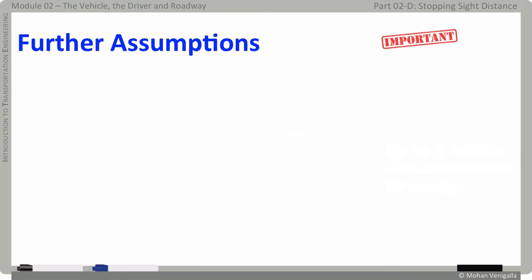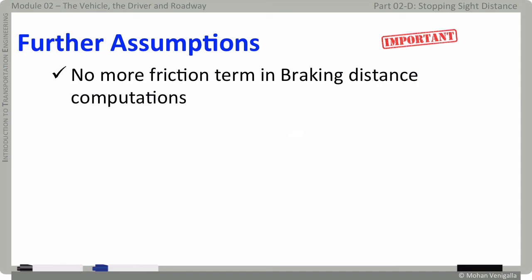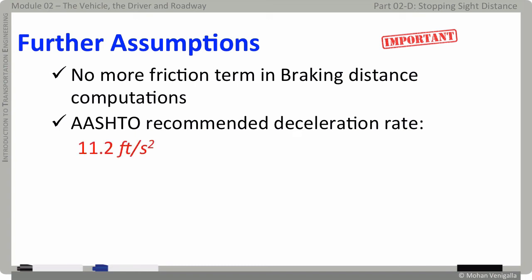For computing braking distance in prior versions of the Green Book, AASHTO recommended using a roadway friction term. Now it is much further simplified by capturing the effects of friction in a generous deceleration rate. AASHTO now recommends a deceleration rate of 11.2 feet per second squared.